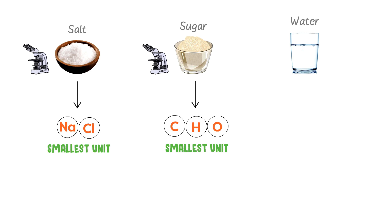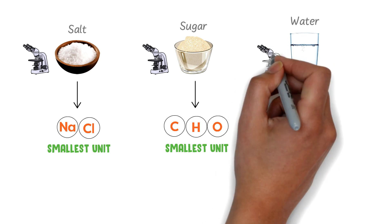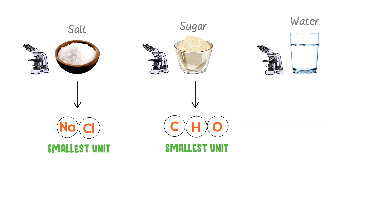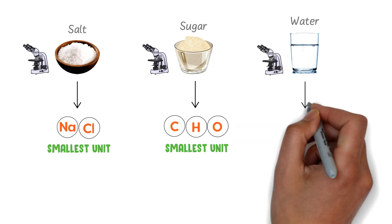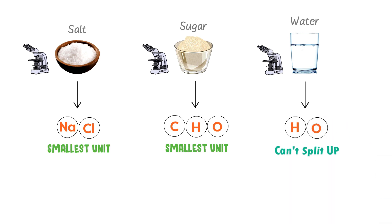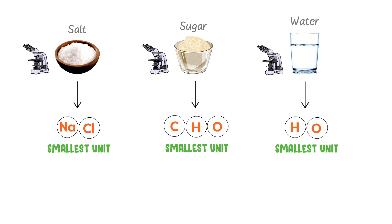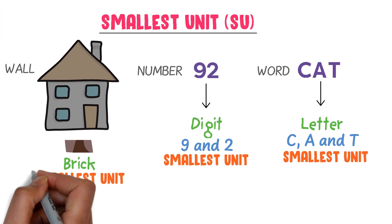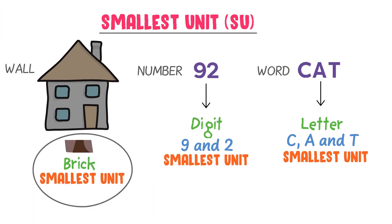If we observe water under an electronic microscope, we find that water is formed from hydrogen and oxygen, and they cannot be split up further into simpler substances. So hydrogen and oxygen are the two smallest units of water. Remember: a brick is the smallest unit of a wall, digits like two or nine are the smallest unit of any number.